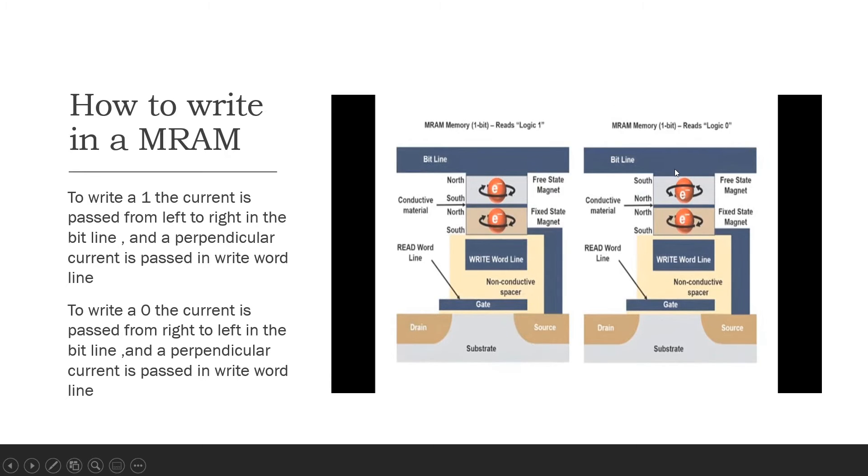The same happens for this, but the direction changes. Since we know that this should be of high resistance, what we do is the current should flow from right to left so that the spin aligns with that direction, anti-clockwise. So that's how write is done in an MRAM.